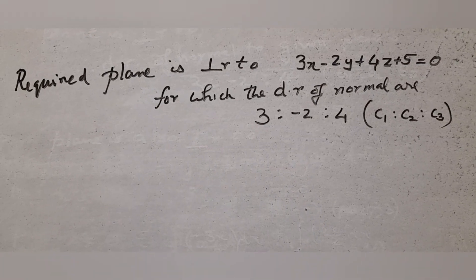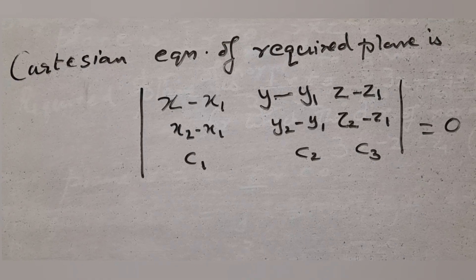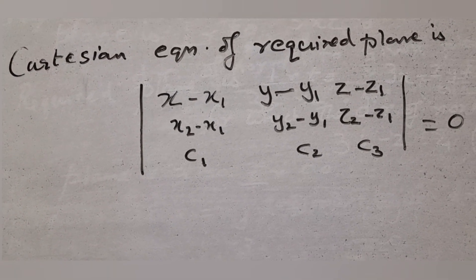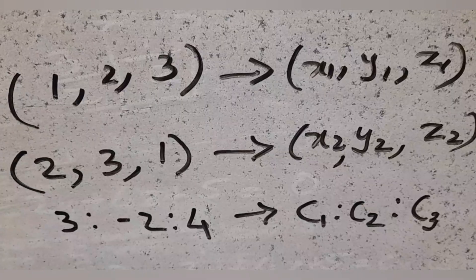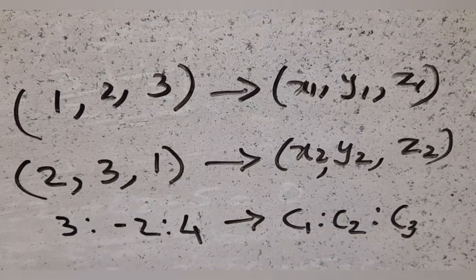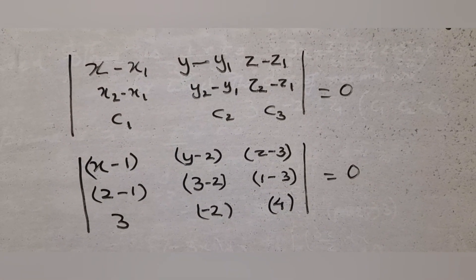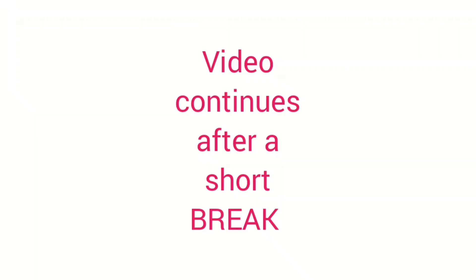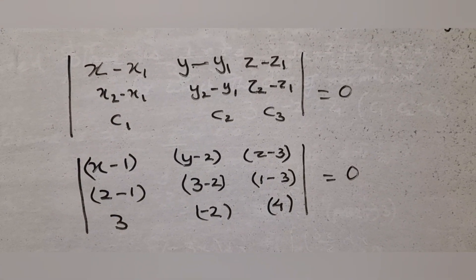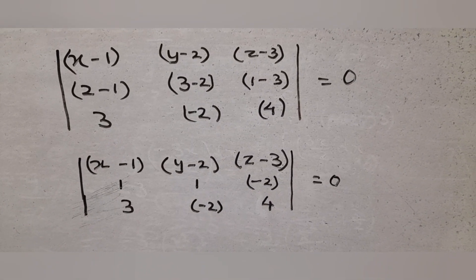Substitute these values into the formula for the equation of a plane passing through two points and perpendicular to a given plane. Expand the determinant carefully, and cancel the common factors to get the required answer.